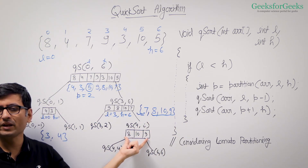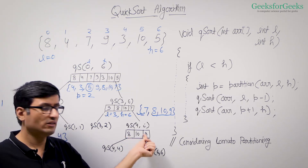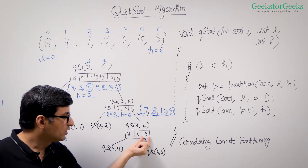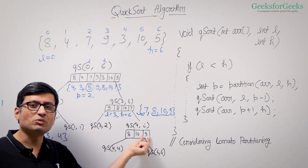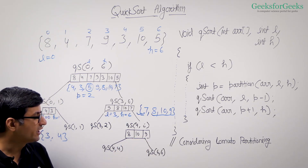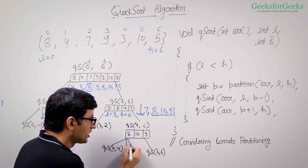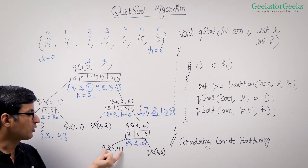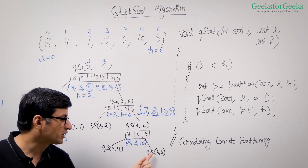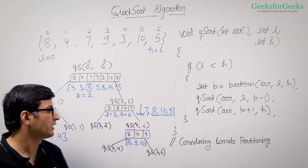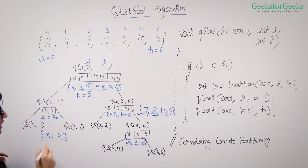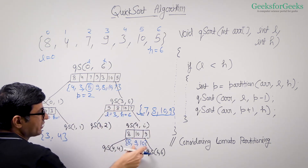The next call in the parent function is for the right sub-array: 8, 10, 9. Here, 9 is the pivot. Partition arranges the array to 8, 9, 10 and returns index 5. Quicksort then calls for 4 to 4 and 6 to 6, both of which immediately return since they contain single elements. Your array is now fully sorted: 3, 4, 5, 7, 8, 9, 10.